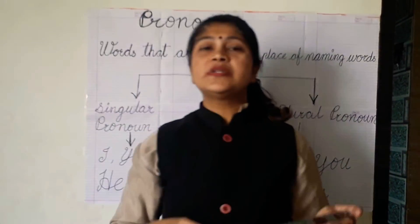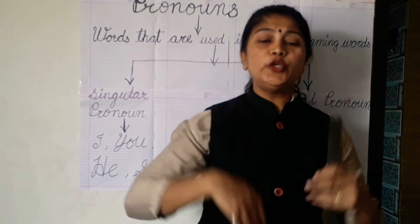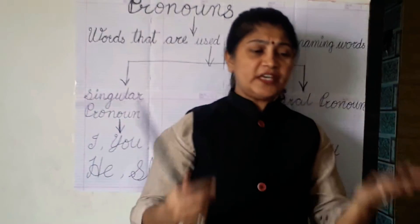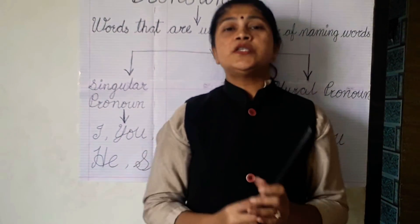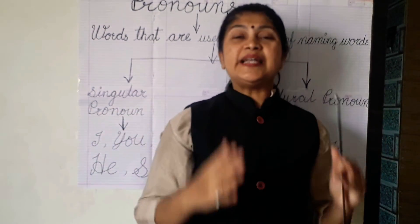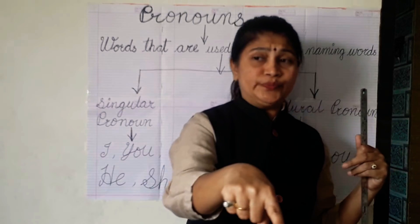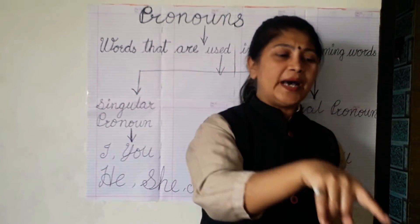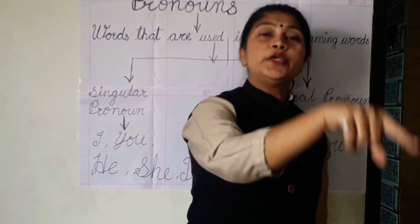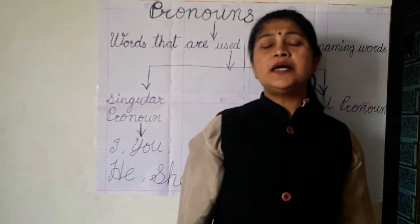Now I am talking with you. I am here and you are there. You all are my children. I am talking with you and you are talking with me. Every time we are not using your name, so that time I use a pronoun. What we use for you? I use you. You are a girl. You are a boy. You are very naughty. So, you is the pronoun.